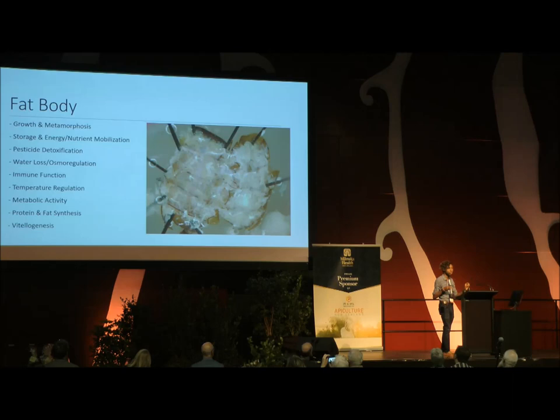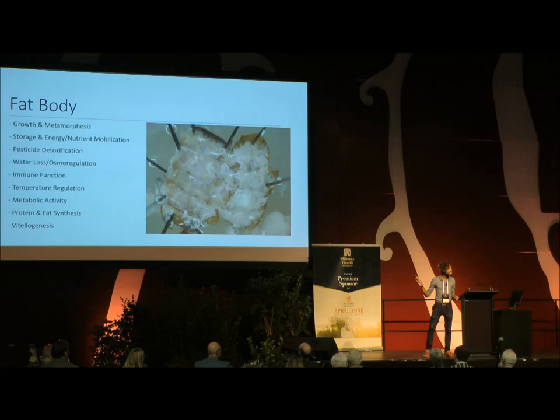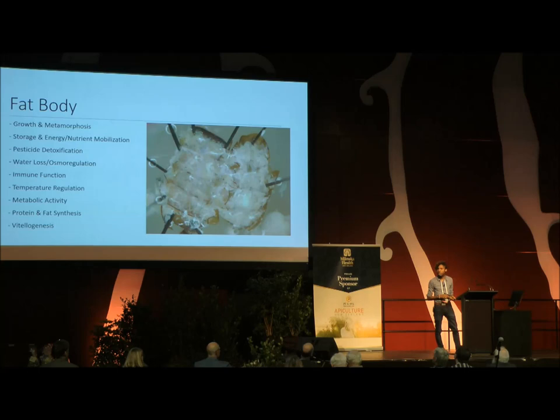This is about the portion of the presentation where people start to ask me: why should we care? If the mites are feeding on the bee's blood or if they're feeding on the bee's fat body, either way they're still damaging our bees and we should be deeply concerned, correct? I agree. However, I think that it is actually of substantially greater concern that these organisms are feeding on the bee's fat body than their blood. Let me explain why.